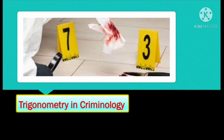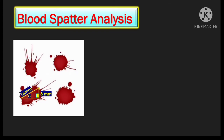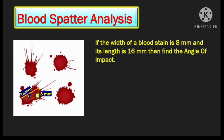Another important application of trigonometry is in criminology. Trigonometry is very useful in blood spatter analysis, which is the interpretation of blood stain patterns. This is done mainly by forensic experts to reconstruct the scene of a crime or accident and to determine where the blood originated from. Suppose the width of a blood stain is 8 millimeters and its length is 16 millimeters — then they find the angle of impact, which tells us the angle at which the blood hit the surface. You're getting a right angle triangle, so you can use trigonometric concepts.